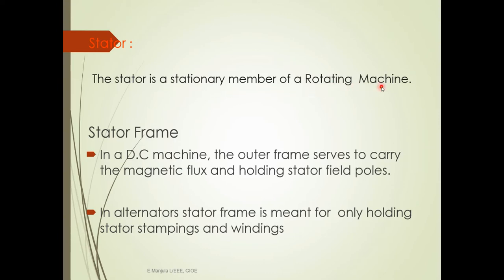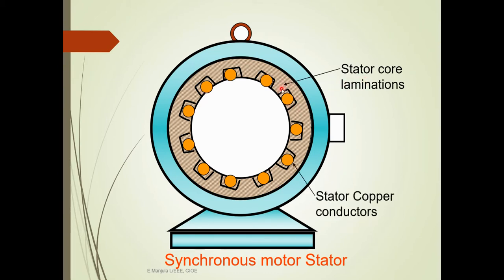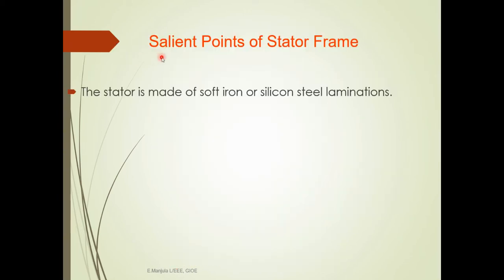The stator is a stationary member of a rotating machine. Regarding the stator frame: in a DC machine, the outer frame serves to carry the magnetic flux and hold stator field parts. In alternators, the stator ring is meant only for holding stator stampings and windings. This is the yoke or frame — the stator frame — which holds the stator conductors. This is the laminated stator core, copper conductors for winding, a terminal box, and an eyebolt for carrying.